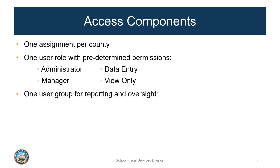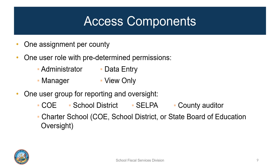Another component is the user group, which determines the type of entity the user can access, including the entity itself and any entities under its oversight. These include COE, School District, SELPA, County Auditor, and Charter School. Charter schools are divided into three categories depending on which entity is responsible for oversight, such as COE, School District, or the State Board of Education. Lastly, each assignment must be tied to an entity — an LEA or a SELPA. If the entity is the COE or School District, access also includes any entities under its oversight.